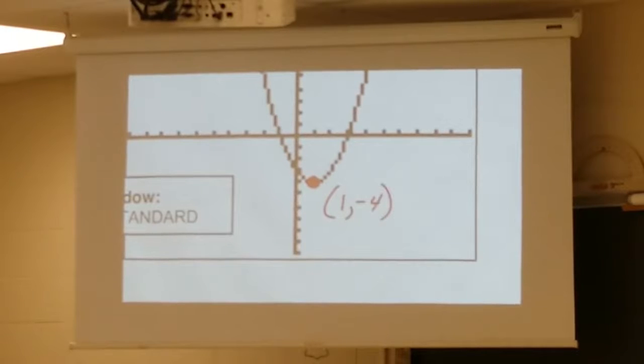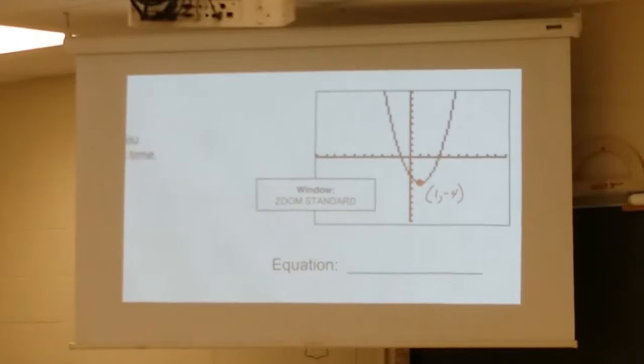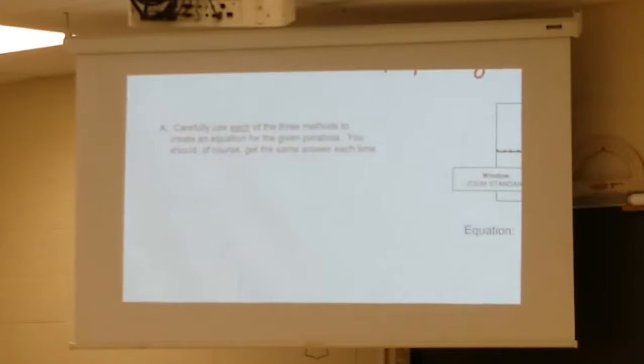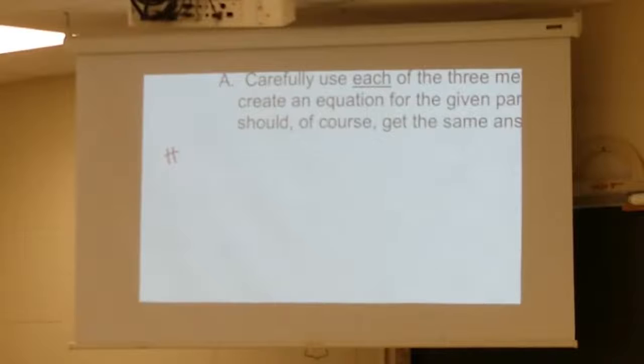Just a little bit of careful counting, you hopefully deduce that it's at 1, negative 4. The interesting thing about the vertex method that I want you to note is that it only uses one point. But that one point, we might argue, is the most important point. If I take the vertex and I carefully plug it in for H and K, we end up saying that we're going to shift to the right. That's why we use a minus 1. And we shift down. That's why we use a minus 4.